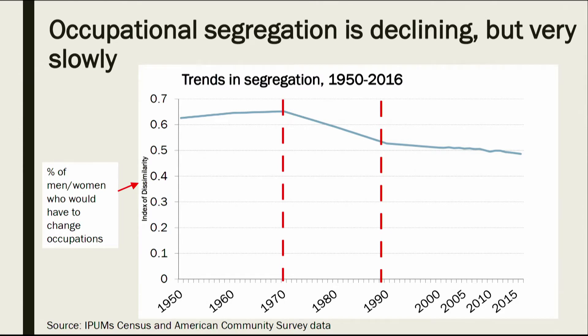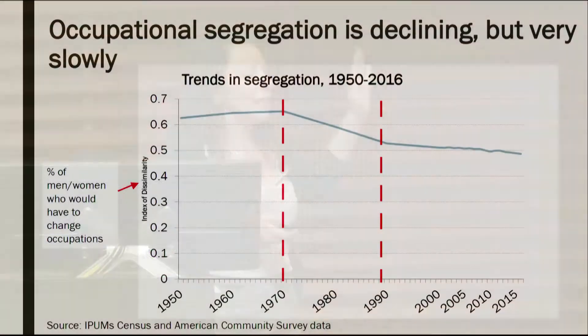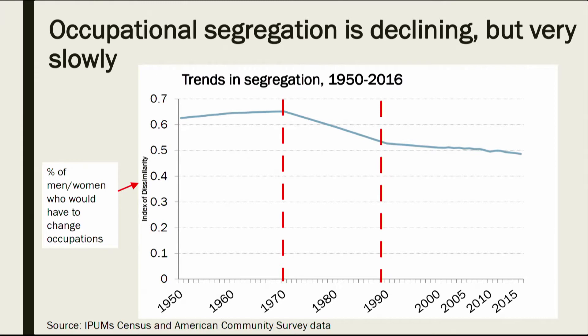In this graph, the y-axis is the index of dissimilarity — the share of men or women that would have to switch occupations for integration to be fully achieved, with integration reached at zero. We are very far off. Looking over the years, we see different rates of change. Between the 1950s and 1970s, segregation actually increased slightly by about five percentage points. Between the 70s and 90s, it decreased quite substantially by about 13 percentage points, dropping from around 65% to 52%.